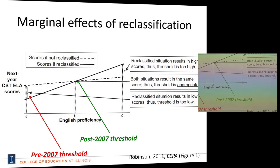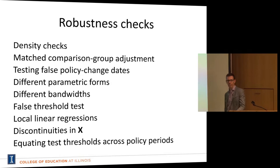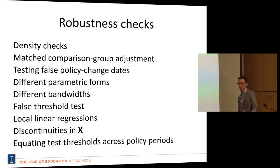The paper has a whole bunch of different kinds of robustness checks. There were about 30-some-odd appendix tables, though the editor asked us to cut it down to 20-something. The results are very robust.